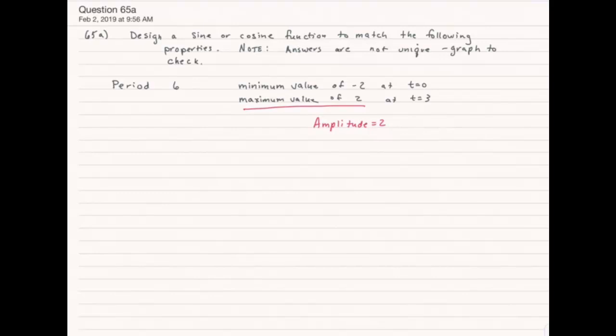And I'm going to think about how this graph looks. It's going to go from a low point of negative 2 at t equals 0 and up to its maximum at t equals 3. This to me looks like an inverted cosine.